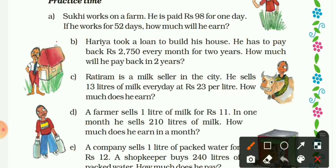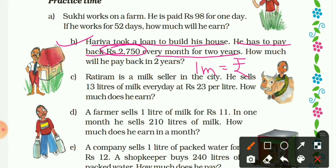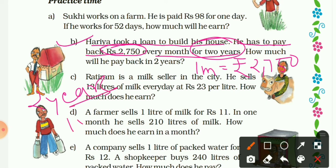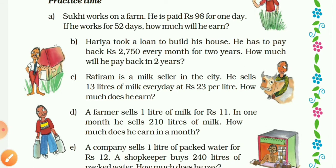Question B: Haria took a loan to build his house. He has to pay back 2750 rupees every month for two years. How much money will he pay in two years? We need to convert two years into months. We know one year equals 12 months, so two years equals 24 months.